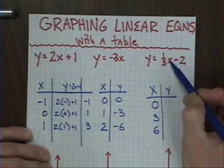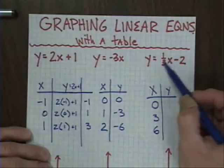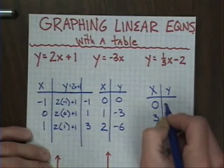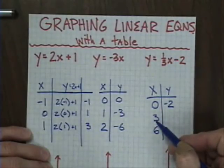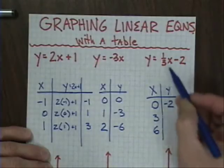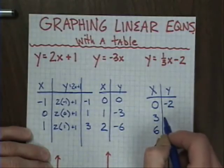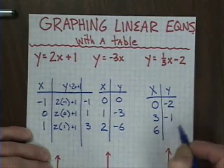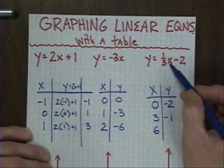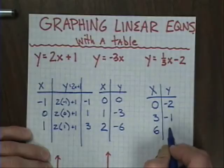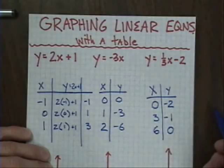Watch what happens. When I multiply 1 third by 0, I get 0. 0 minus 2 is negative 2. Now I'll take the multiple which is 3. 1 third of 3 is 1. 1 minus 2 is going to be a negative 1. And if I take 6, 1 third of 6 is 2, and 2 minus 2 is 0. Thus eliminating the fractions from the problem and making graphing a bit easier.